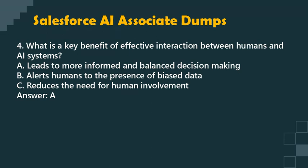Question 4: What is a key benefit of effective interaction between humans and AI systems? a. Leads to more informed and balanced decision making. b. Alerts humans to the presence of biased data. c. Reduces the need for human involvement. Answer: A.